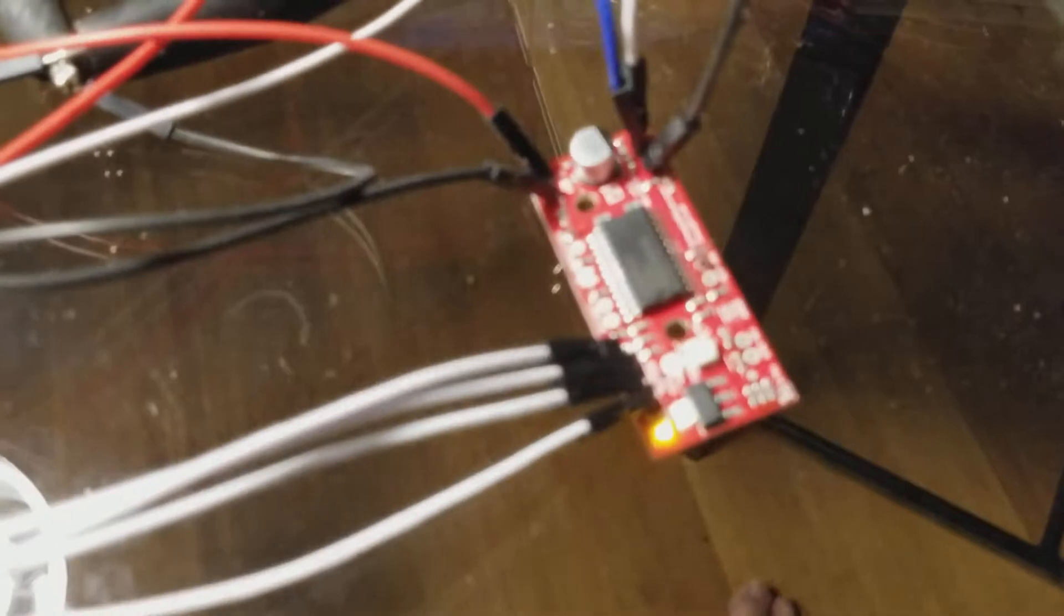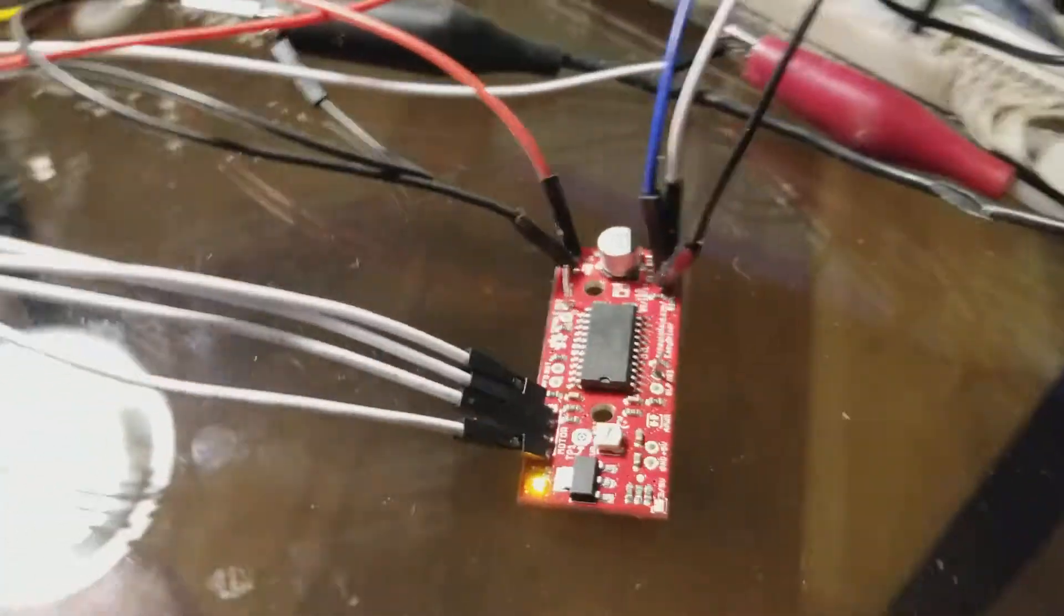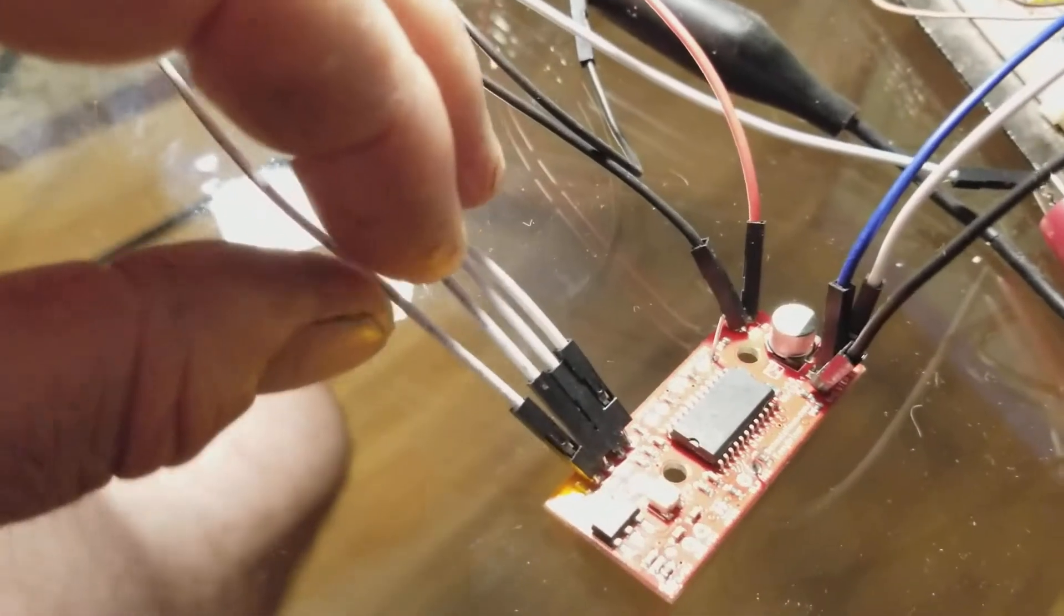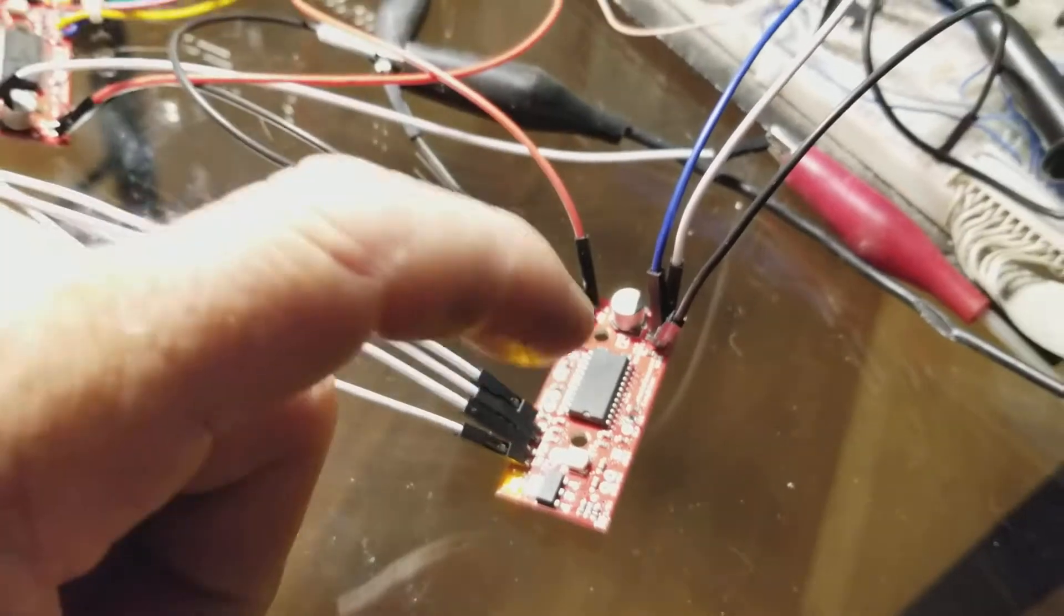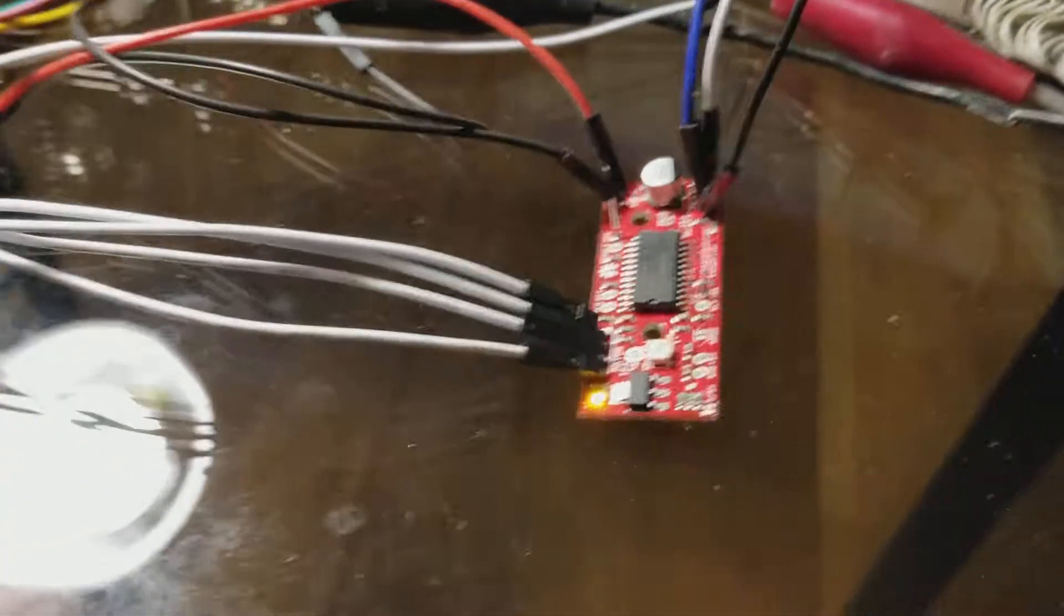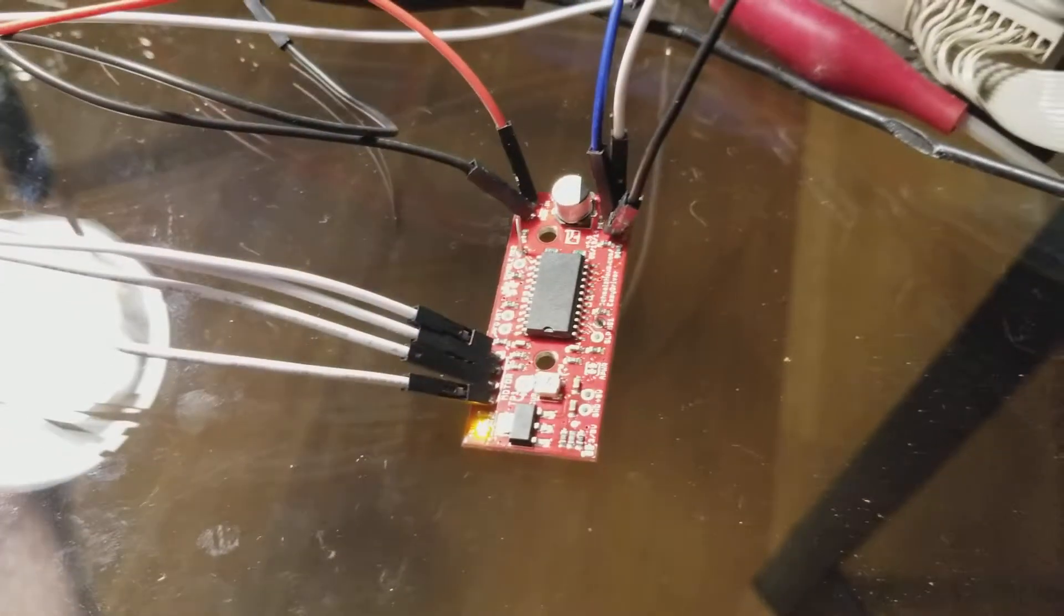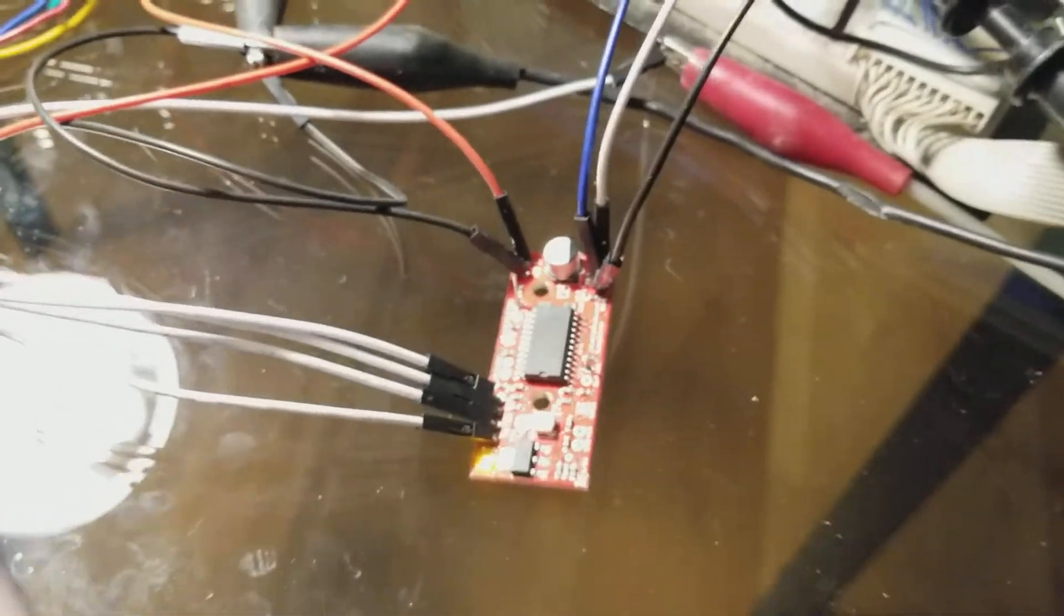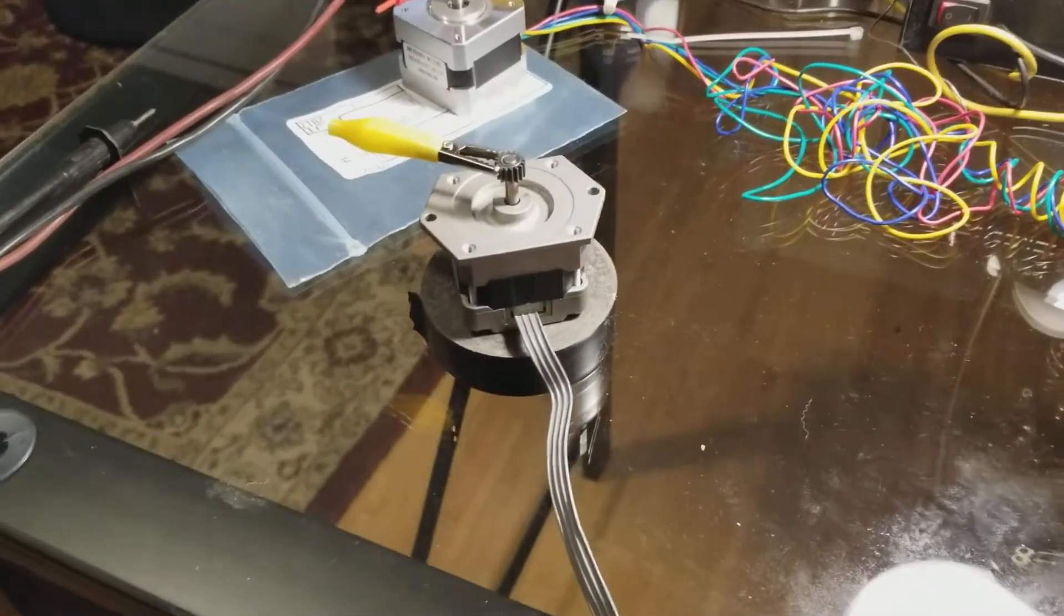So this is a board that drives the stepper motors and makes it pretty simple. It has the two phases that are hooked up here to the outputs and basically you just give it a pulse for every and it'll increment the steps doing the phasing automatically and then you can reverse direction. You can also put some jumpers to do a quarter step or eighth step or half step or whatever. I think I have it just on full step right now, which makes it spin faster, but you lose a little bit of precision.